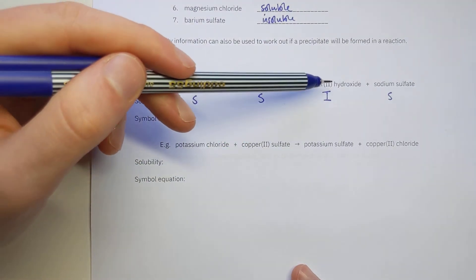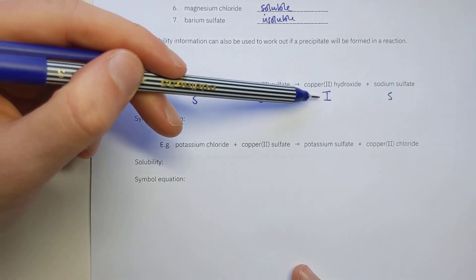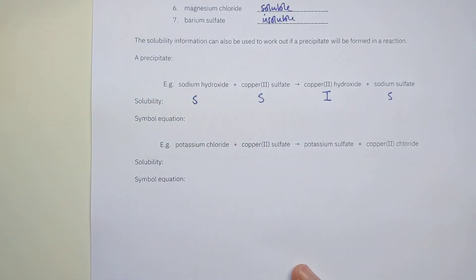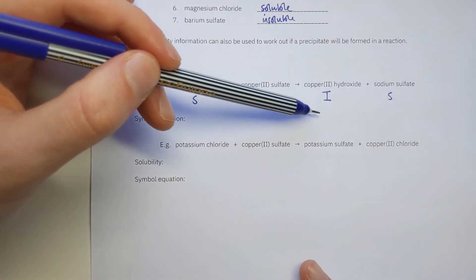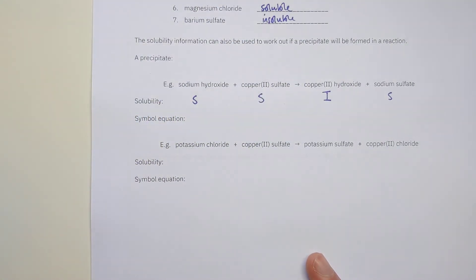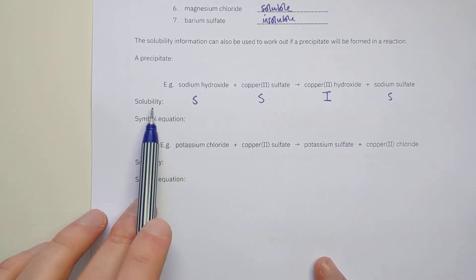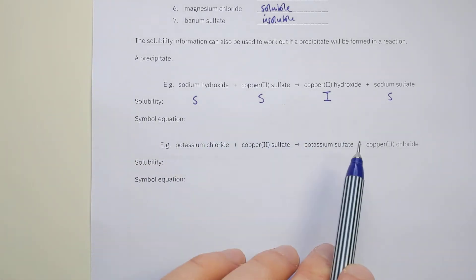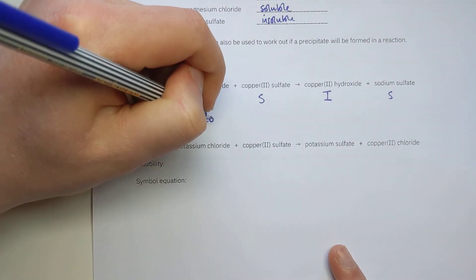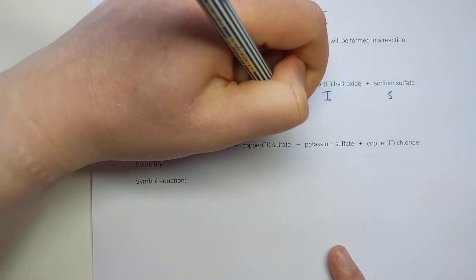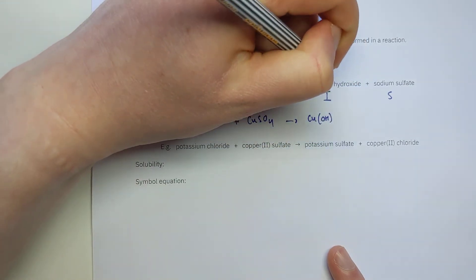If you mix sodium hydroxide solution and copper sulfate solution, the copper(II) hydroxide formed cannot dissolve — it's insoluble — so it forms a solid precipitate. This is actually the equation for the test for copper ions from the last topic: sodium hydroxide makes a blue copper(II) hydroxide precipitate. For the symbol equation, use swap and drop: 2NaOH(aq) + CuSO₄(aq) → Cu(OH)₂(s) + Na₂SO₄(aq), where the insoluble copper hydroxide gets state symbol (s).